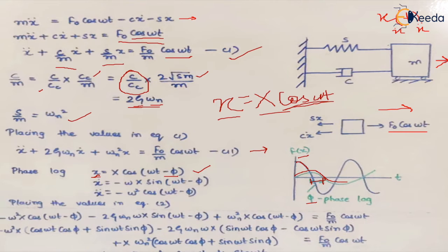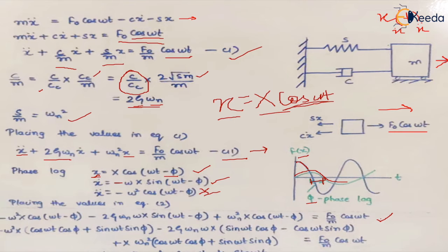With displacement x = X·cos(ωt − φ), velocity is ẋ = −ωX·sin(ωt − φ) and acceleration is ẍ = −ω²X·cos(ωt − φ). Placing these values of displacement, velocity, and acceleration into the equation of motion gives us the expanded equation.